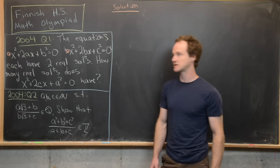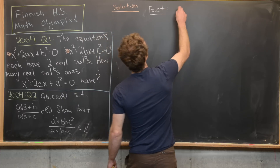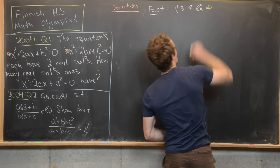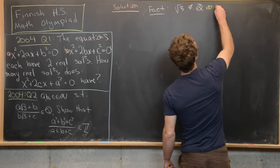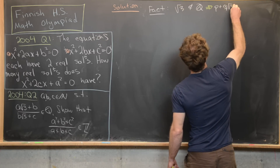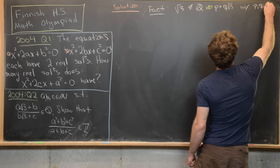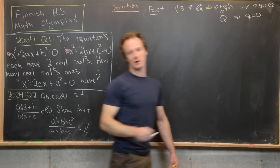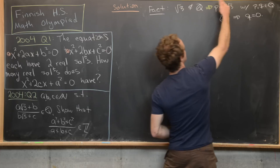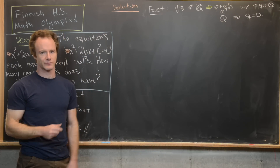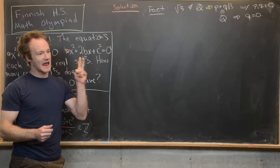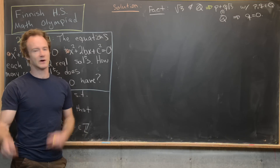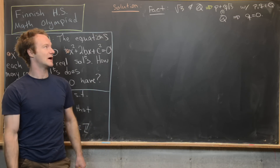We're going to use the obvious fact that √3 is irrational. What that tells us is: if we have a combination p + q√3 with p and q rational numbers, and we know the whole thing is rational, then q must equal zero. There's no way for this to be rational unless the √3 component is zero — because 1 and √3 form a basis for Q(√3) over Q. That's the key fact we'll use.